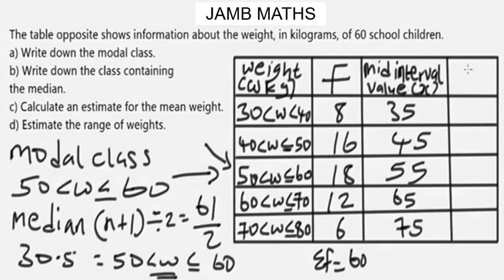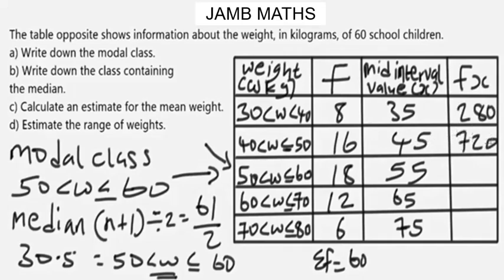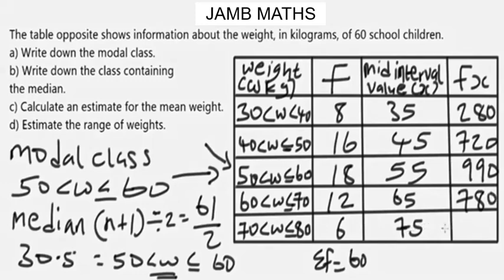Now to get fx, we multiply each mid-interval value x by its corresponding frequency. So: 35 × 8 = 280; 45 × 16 = 720; 55 × 18 = 990; 65 × 12 = 780; 75 × 6 = 450. Adding all the fx values together gives sigma(fx) = 3220.